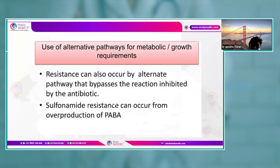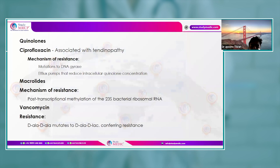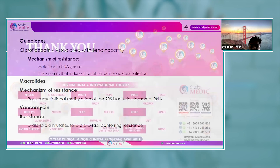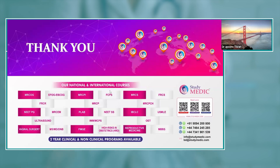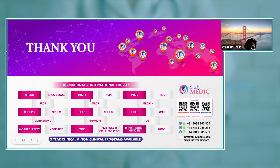The antibiotic resistance mechanisms covered here represent what is typically assessed in MRCP Part 1. Remember, we are discussing antibiotic — i.e., antibacterial — resistance, not antifungal resistance.